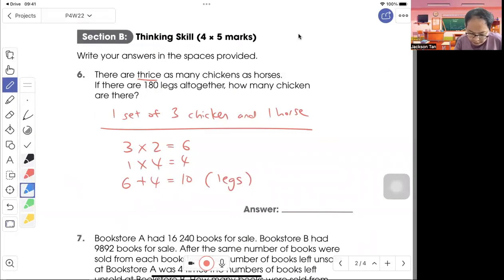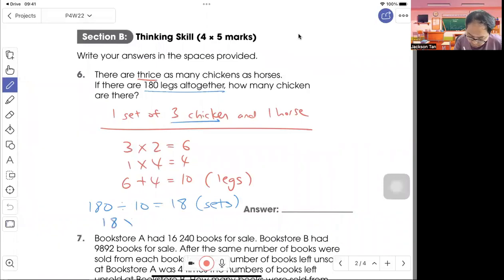We mentioned that there are 180 legs altogether. You just take 180 divided by 10. So we know that there are 18 sets of the animals. So one set has 3 chickens. So 18 times 3, total there will be 54 chickens.